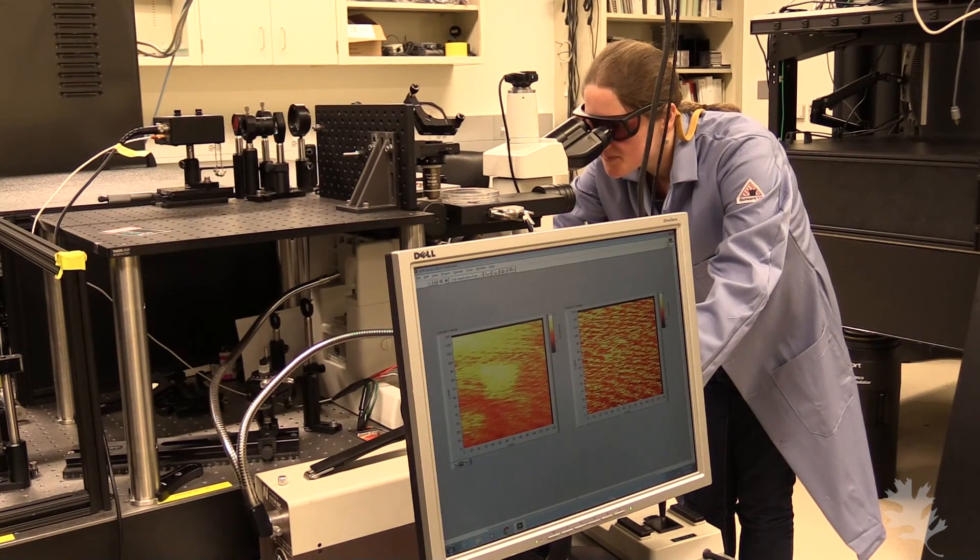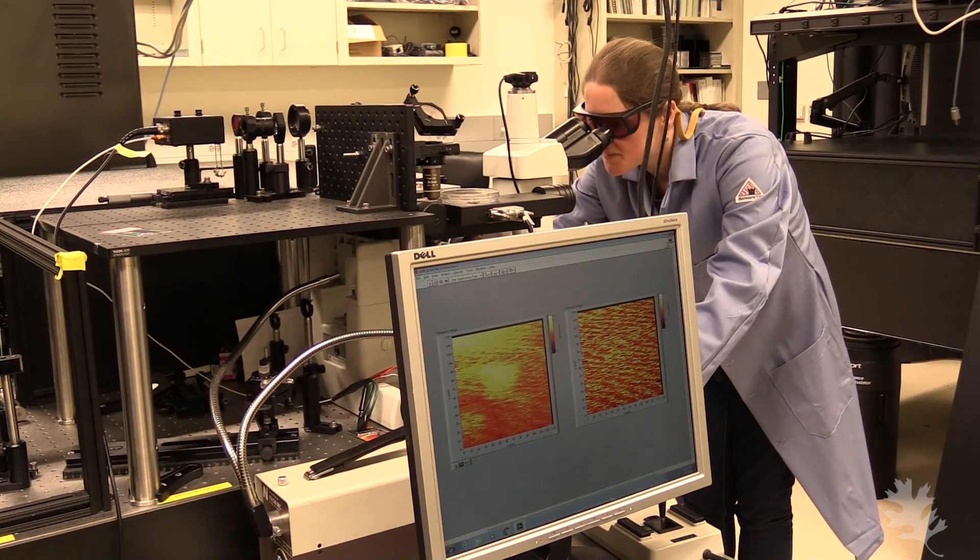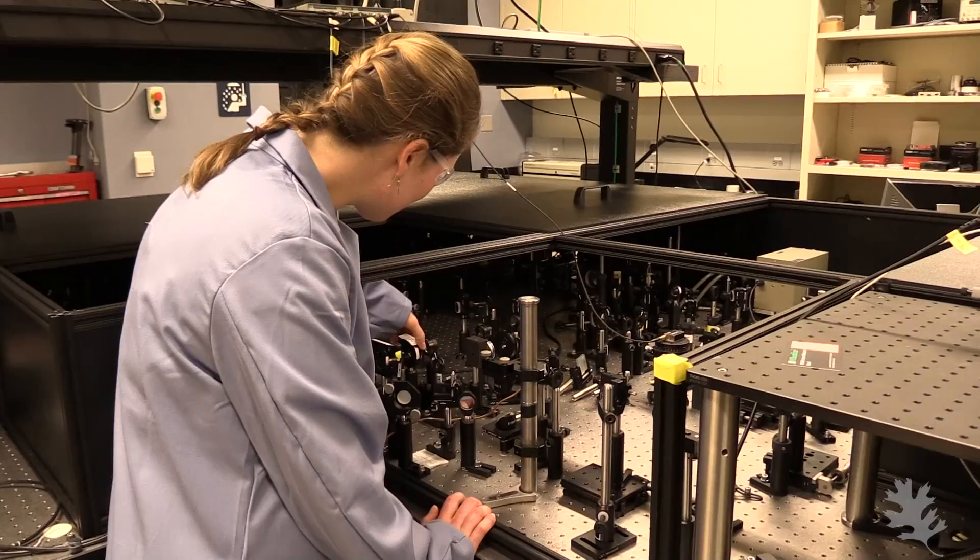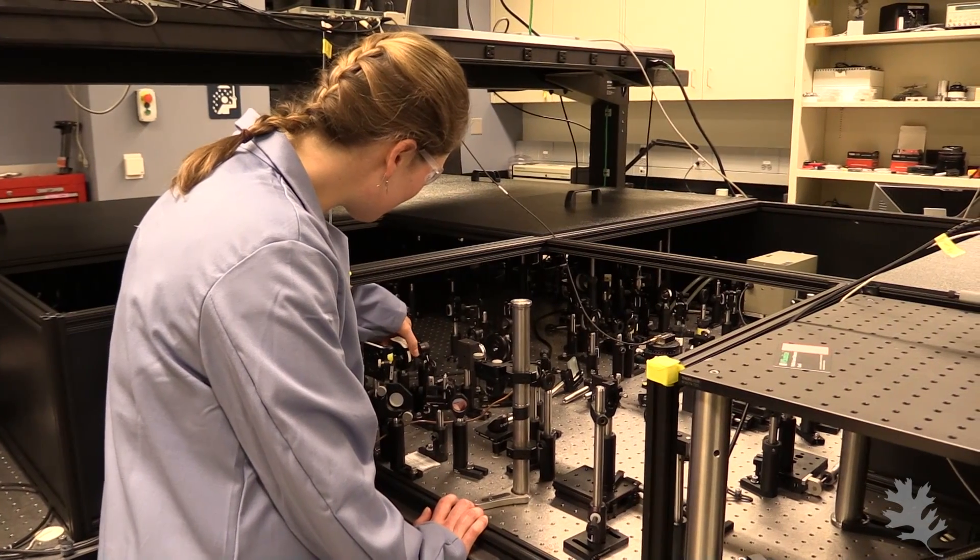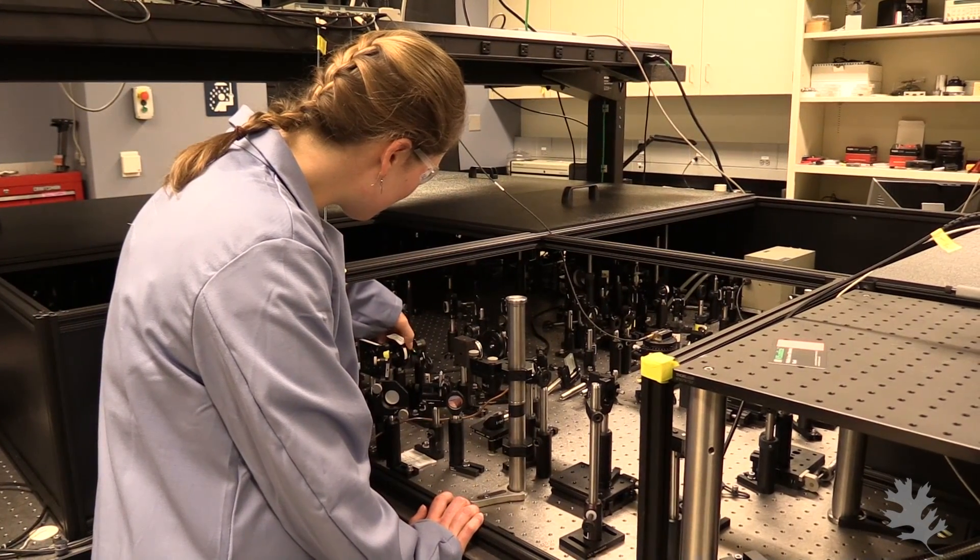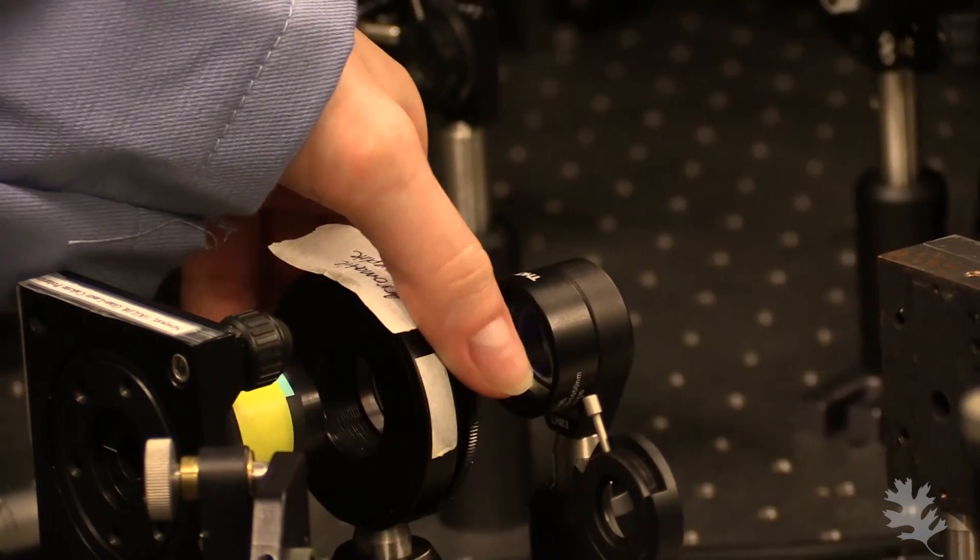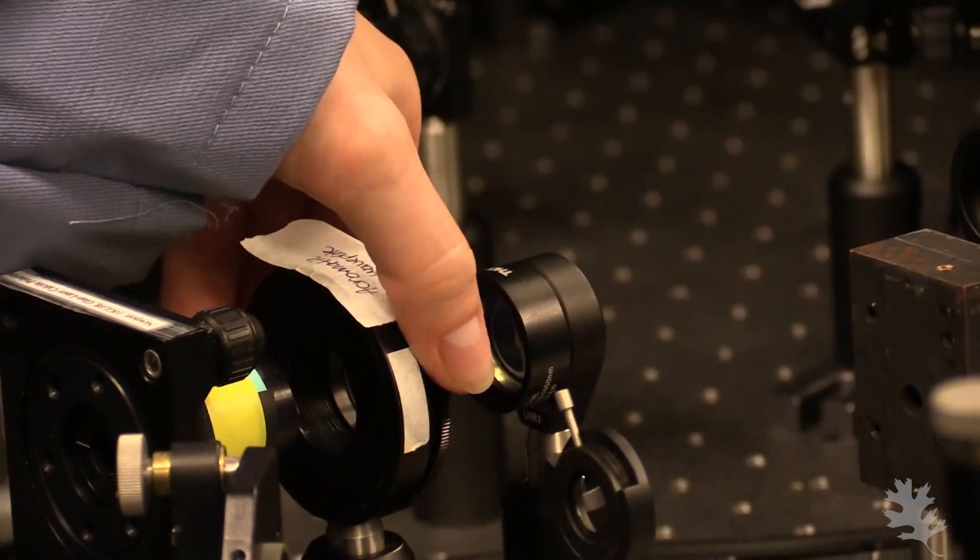By watching where the charges are formed, we can also watch where they're lost, which we can then tell the people who are manufacturing these materials so that they can optimize their techniques and get rid of those places where their electrons are being lost.